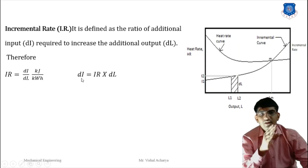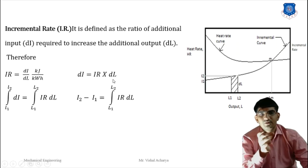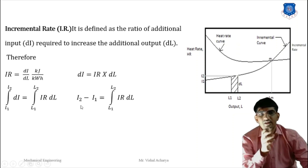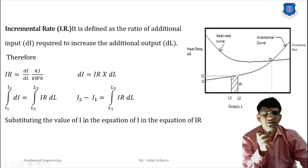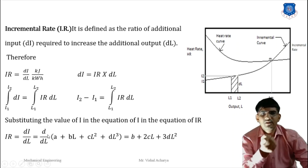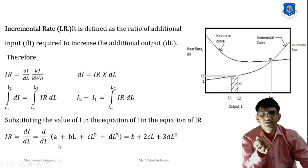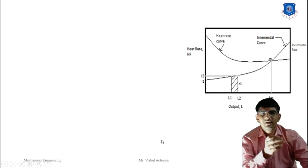Increased input equals incremental rate multiplied by increased additional output. Integrating both sides with limits I1 to I2 for input and L1 to L2 for output, we get: I2 − I1 = integral from L1 to L2 of (dI/dL) dL. The incremental rate = dI/dL. Given input I = A + BL + CL² + DL³, differentiating with respect to load: dA/dL = 0, d(BL)/dL = B, d(CL²)/dL = 2CL, d(DL³)/dL = 3DL². Therefore, incremental rate = B + 2CL + 3DL².